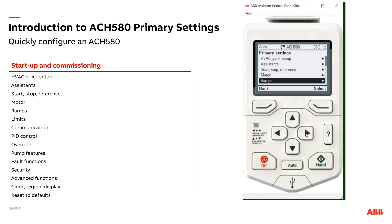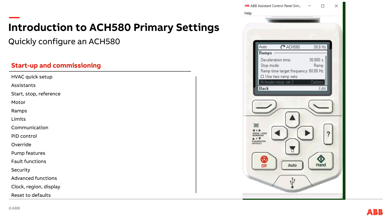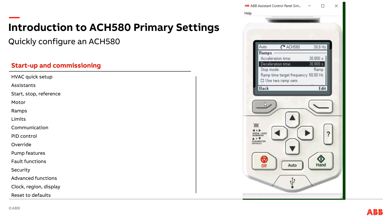Then you've got your ramps — my accel and decel time, and again my stop mode is also listed here if I want to coast or ramp to a stop. For certain applications I might want ramp sets, so maybe I go from zero to 30 hertz really quickly and then 30 to 60 hertz at a slower pace. Submersible pumps are a good example — you can set up multiple ramp sets within here.